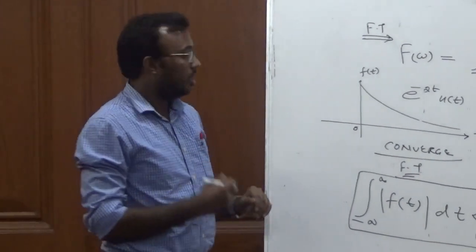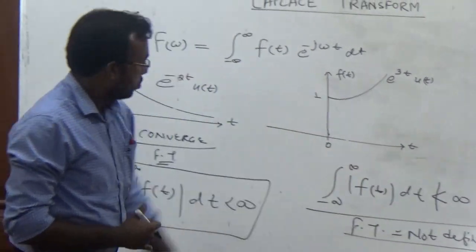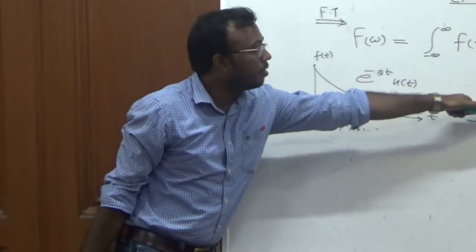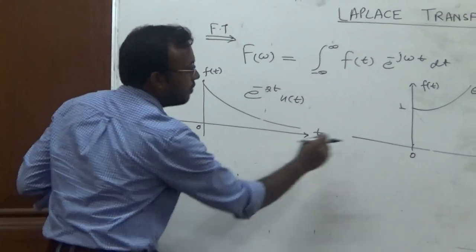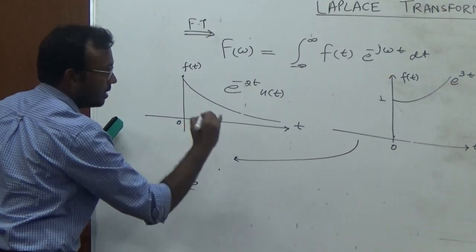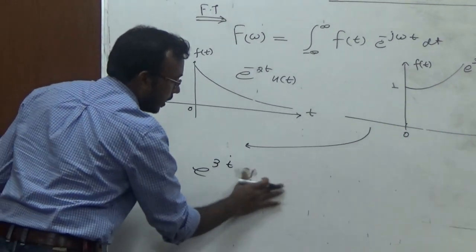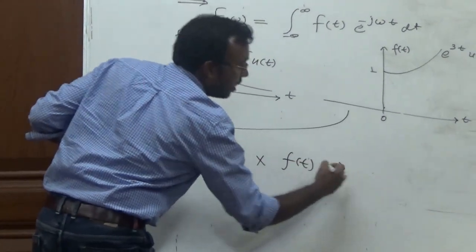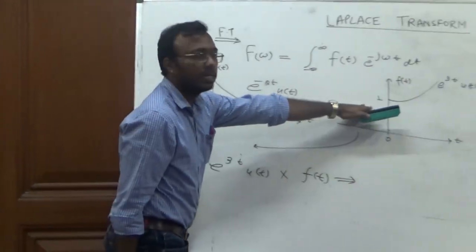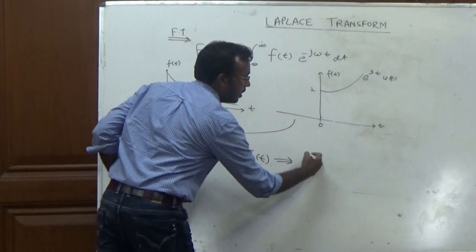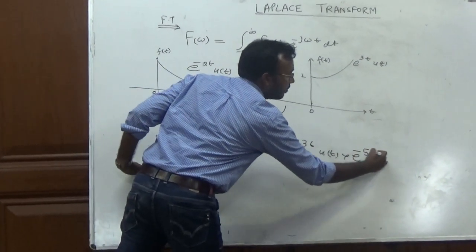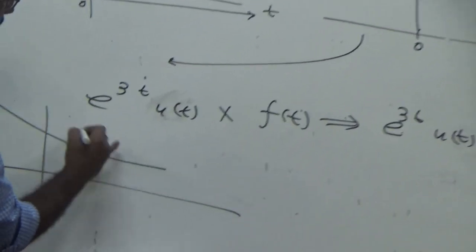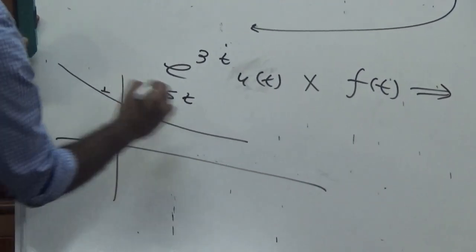Now, how can we find the Laplace Transform — that is, the frequency domain — of that particular type of non-integrable signal? We can write the signal as e^(3t) multiplied by a particular signal f(t). To make this signal absolutely integrable, we multiply it by e^(-σt). So we add one signal e^(-σt) and include it in multiplication with the original signal.